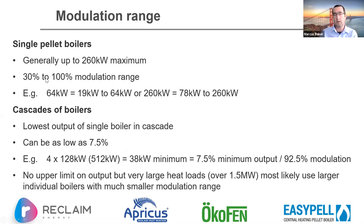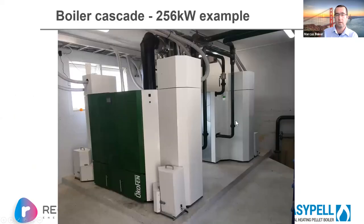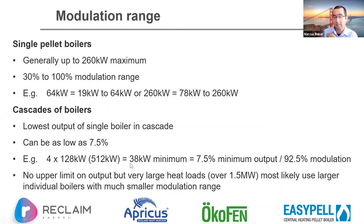Looking at modulation generally, 30 percent is typically the minimum output across boilers up to 260 kilowatts — so for an Ökofen 64-kilowatt unit, you go from 19 up to 64 kilowatts. For cascades, the minimum is only 38 kilowatts from a 500-kilowatt system, giving a huge modulation range — down to about 7.5 percent — which is amazing if you've got very variable heat loading.